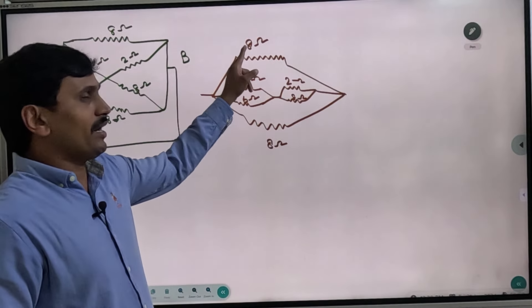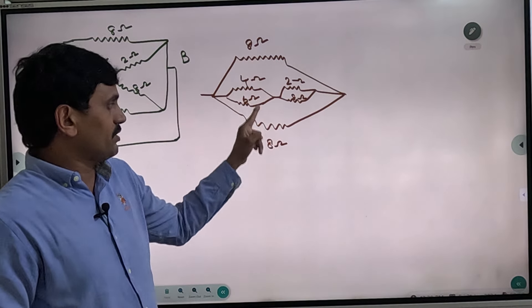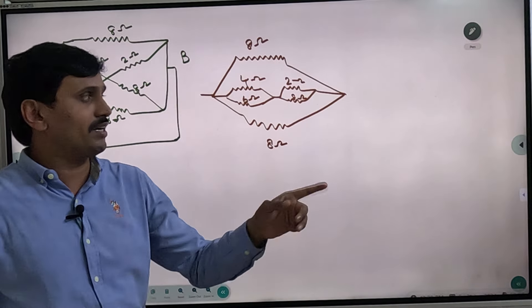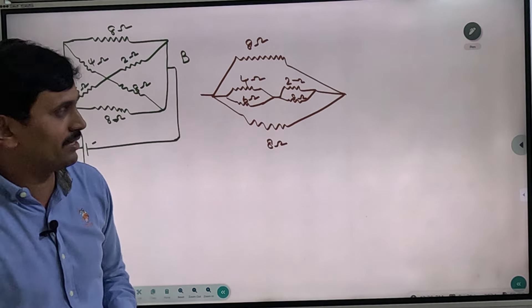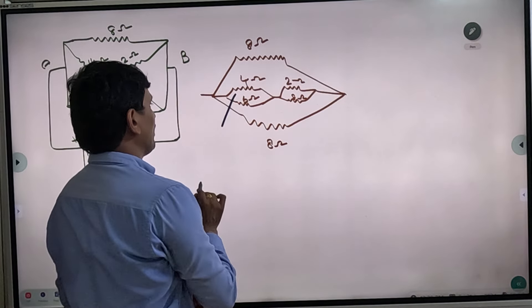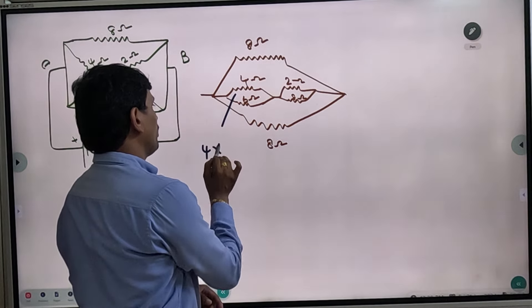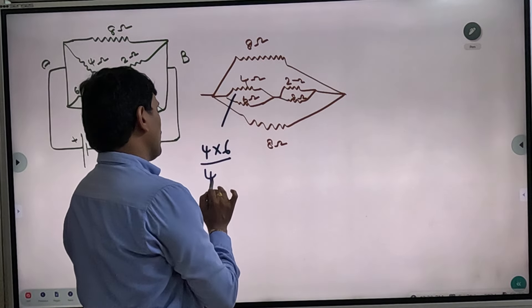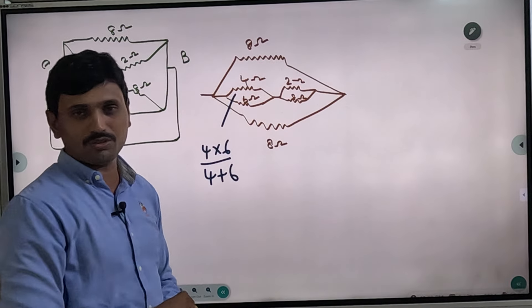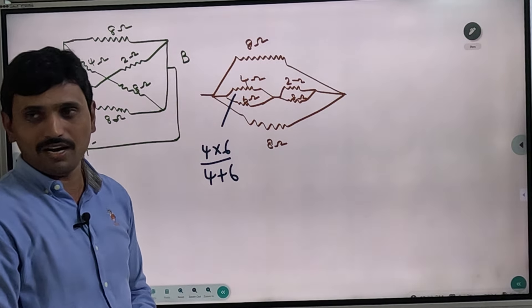First, what is the calculation? The resistance is 4 into 6 by 4 plus 6. For parallel, it's 2 into 6 by 2 plus 6. Now parallel.